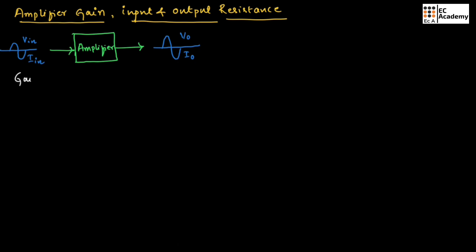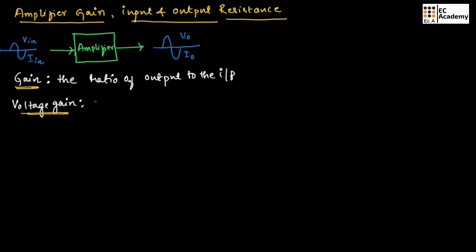Gain can be generally defined as the ratio of output to the input. From this general definition, we can define voltage gain. Voltage gain is generally represented as AV, and is defined as AV equals V_naught divided by V_in — the ratio of output voltage to input voltage.